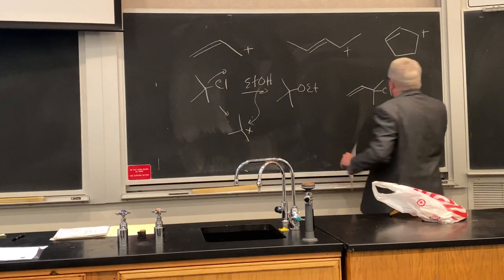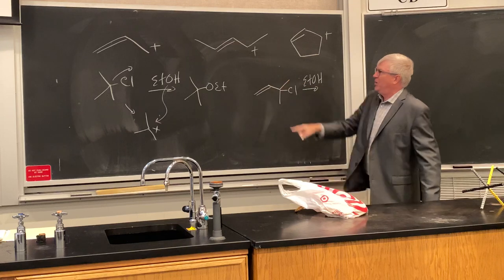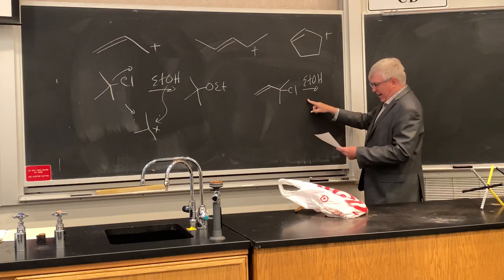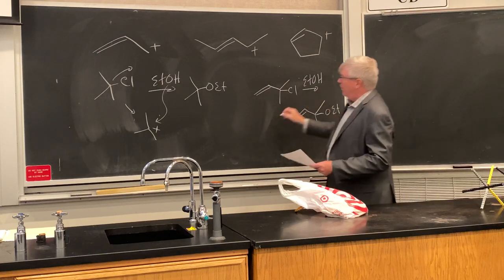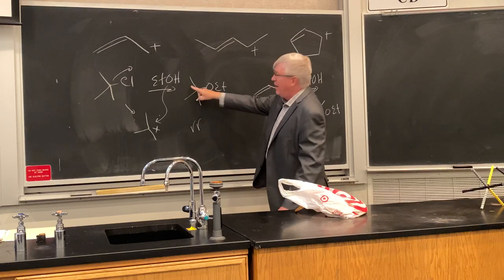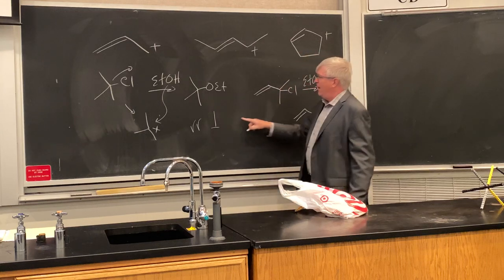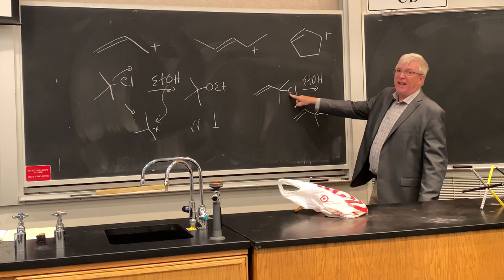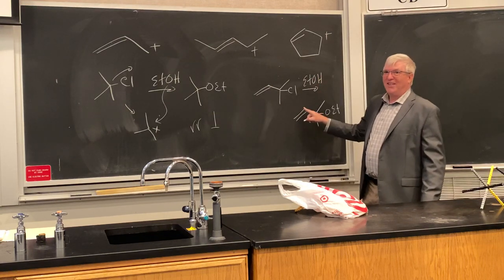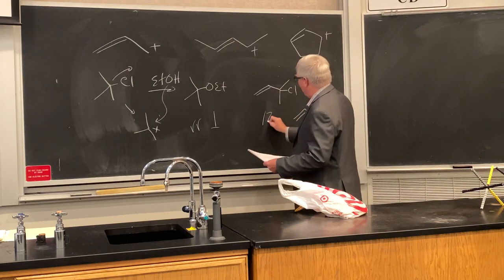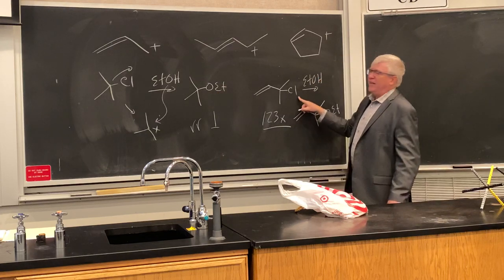Here's another tertiary chloride, but it has an adjacent alkene. Under the same ethanol conditions as tert-butyl chloride, it gives a product. Normalizing the tert-butyl chloride rate to 1 — which completes in about 15 minutes — the allylic tertiary chloride is 123 times faster, done in just a few seconds. Why? Because the resulting carbocation is delocalized.